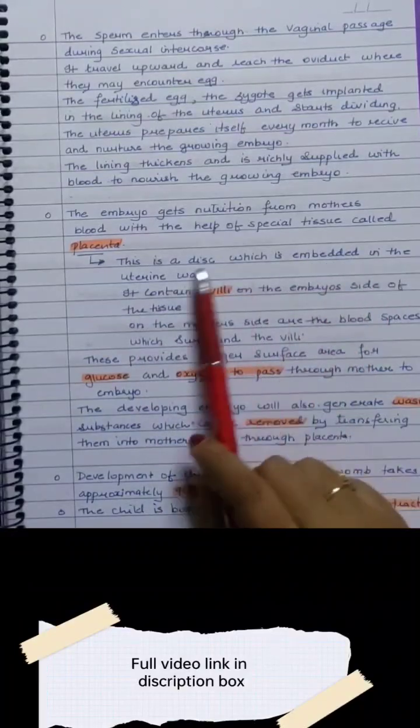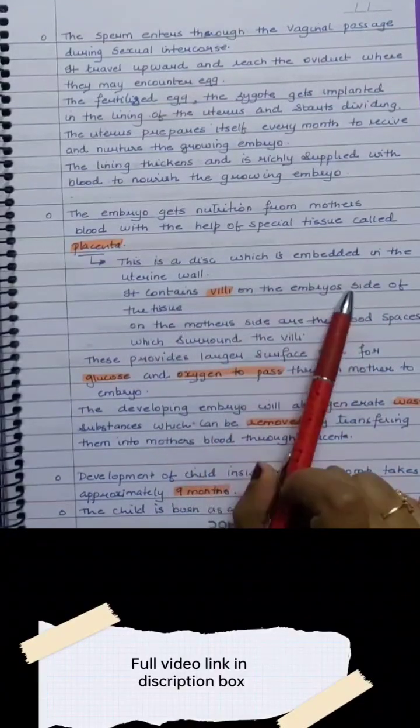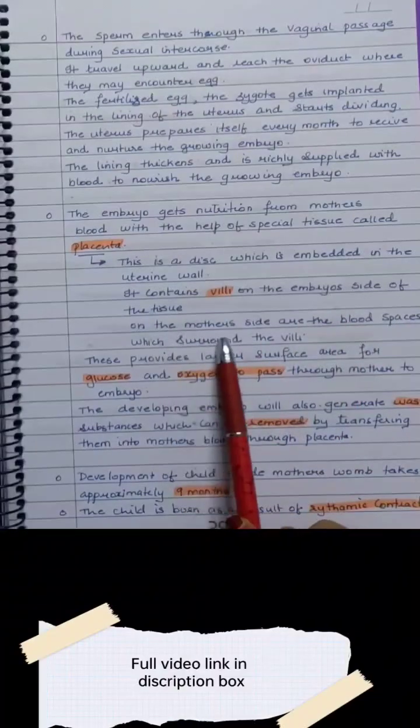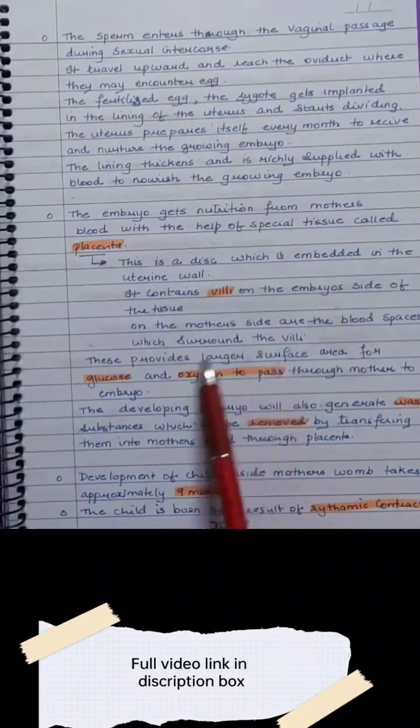Placenta is a disc which is embedded in the uterine wall. It contains villi on the embryo's side of the tissue. On the mother's side are blood spaces which surround the villi.